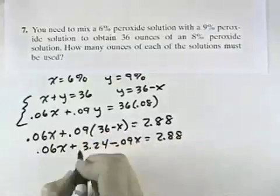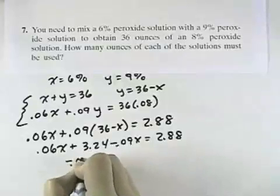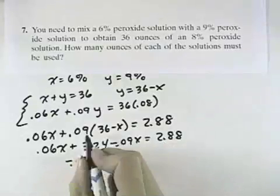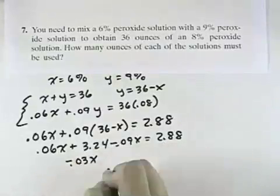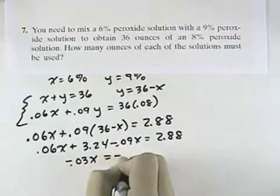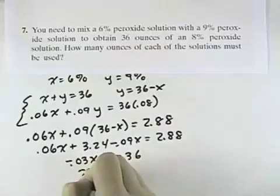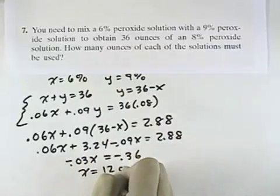Combining the x terms, 0.06 minus 0.09 is negative 0.03x. 2.88 minus the 3.24, if we subtract 3.24 from both sides, we'll equal negative 0.36. So that x equals, when we divide, we'll equal 12 ounces.